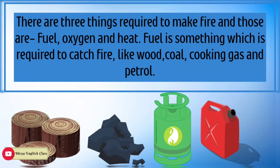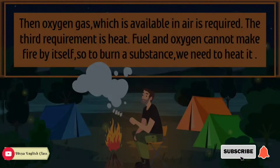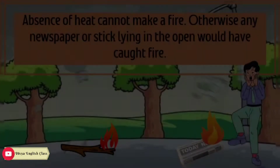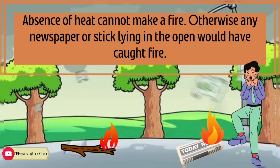There are three things required to make fire: fuel, oxygen, and heat. Fuel is something which is required to catch fire, like wood, coal, cooking gas, petrol, etc. Oxygen gas, which is already available in air, is also required. The third requirement is heat. Fuel and oxygen cannot make fire by themselves, so to burn a substance, we need to heat it. Without heat, no fire can start — otherwise, any newspaper or stick lying in the open would have caught fire on its own.